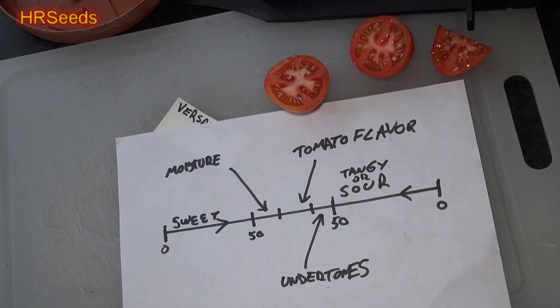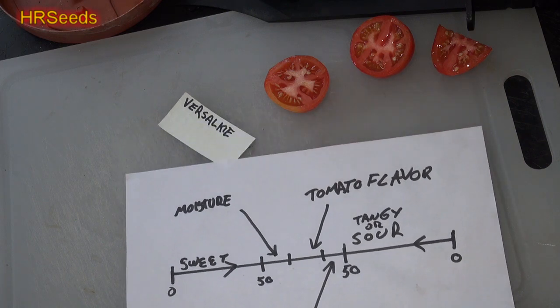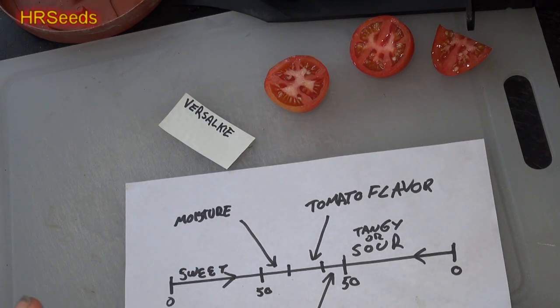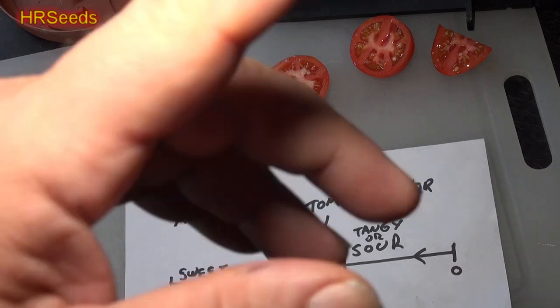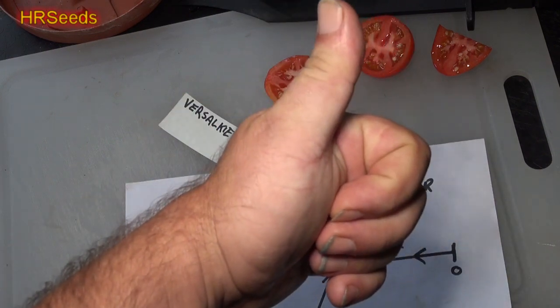That's really it. That's about all I can say about this variety of tomato. Again, it's called the Versalki tomato. I'm not sure what country it's from, probably from the Baltic regions or maybe Russia itself. I'll leave all that information in the description. You can pick up the seeds from hrseeds.com. I'll leave a link below. It's going to take me a few days to build the page, so be patient. Don't forget to like, share, and subscribe. I'll see you on the next one, take care.